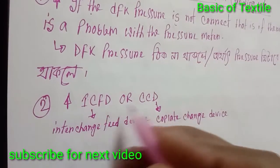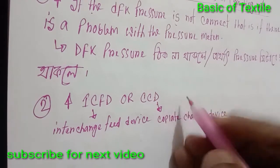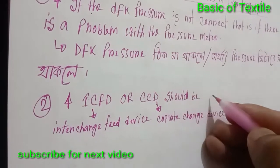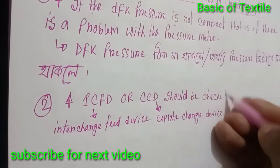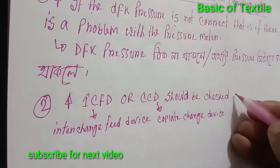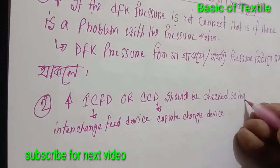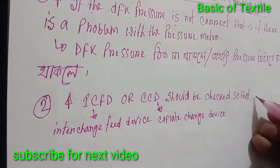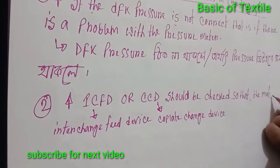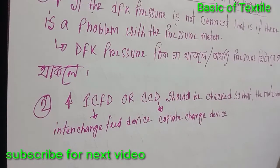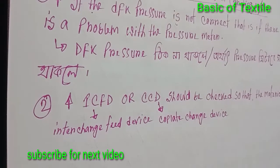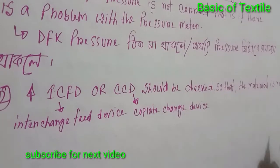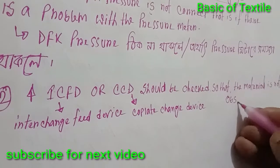Now, the CCD should be checked so that the material is not obstructed. The material should not be abstracted or blocked in the carding machine.